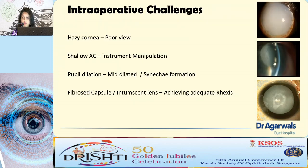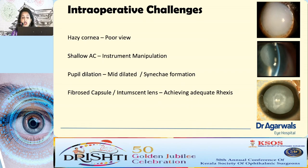Intraoperative challenges include: hazy view due to corneal edema; shallow AC making instrument manipulation difficult; poor pupil dilation with possible posterior synechiae; and fibrosed capsule due to chronicity, making ideal capsulorhexis difficult. In a video of SICS: the view is totally compromised with lens particles along the angles. After a 5mm incision and superior rectus fixation, a thorough AC wash is performed, and the view becomes clear. After viscoelastic injection, the nucleus — usually small in hypermature cataract — is brought into the anterior chamber and extracted.